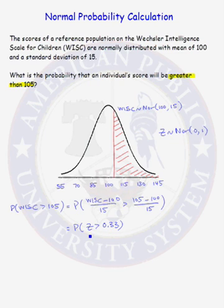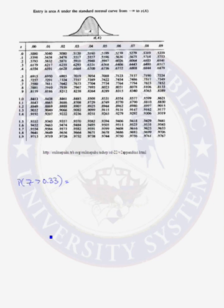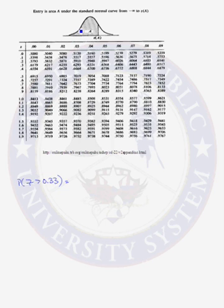Now that our probability statement is in terms of the standard normal random variable, we can use the standard normal table to find this probability. We want to find the area to the right of a Z score of 0.33. But if we look up 0.33 in the table, this table gives you the area to the left of 0.33. So we convert using the complement: the probability that Z is greater than 0.33 is the same as 1 minus the probability that Z is less than 0.33.